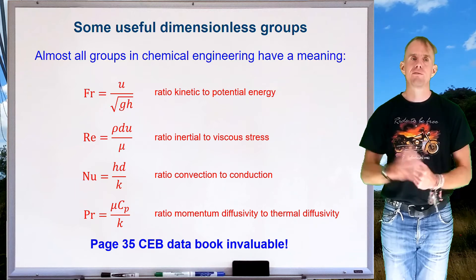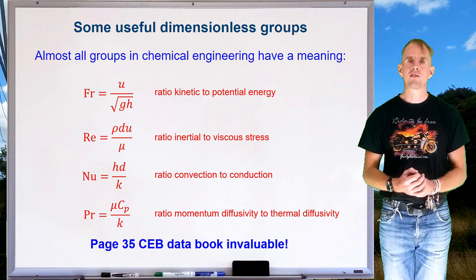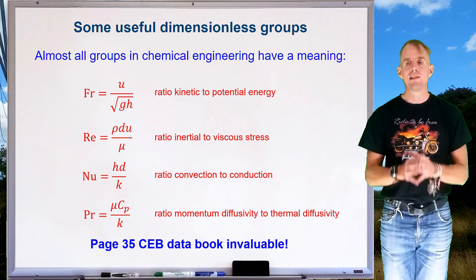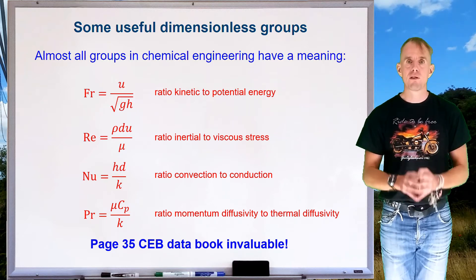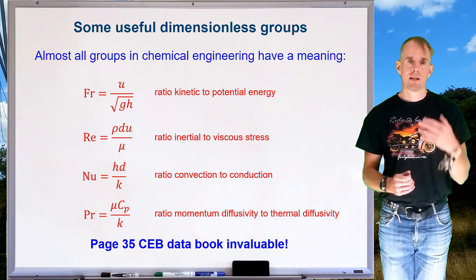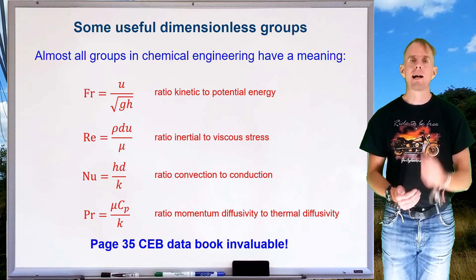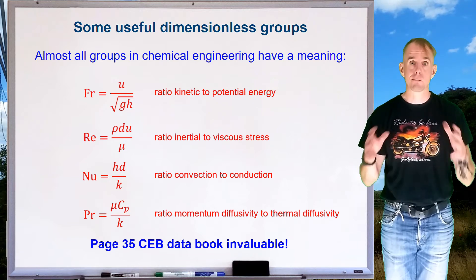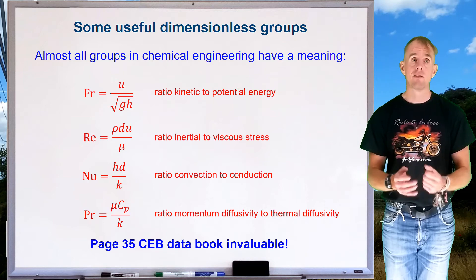Now, on page 35 of your data book, you will find somewhere near 20 or 30 dimensionless groups listed. Please become familiar with this page in your data book. Every day, look at it. Learn what another dimensionless group actually physically means. This will help you to develop mental models quickly and easily.